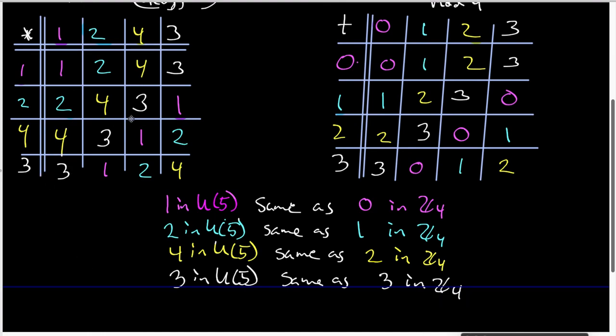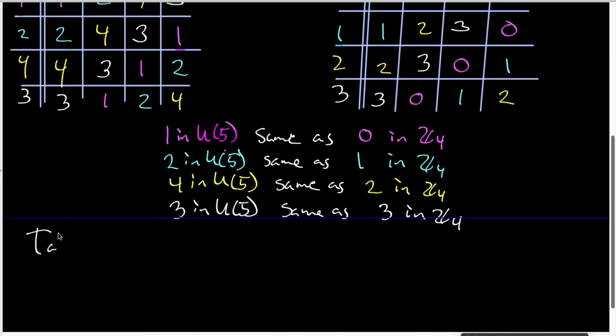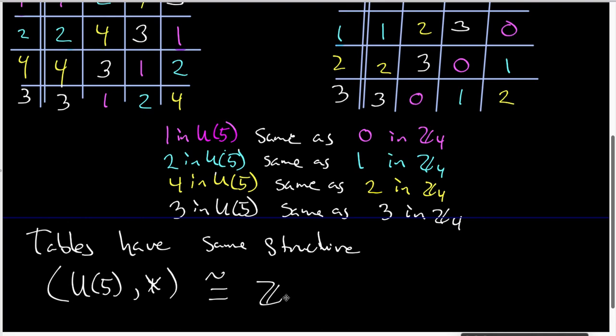And by this, I mean that they are in exactly the same places in the tables. So what this means is that the two tables do have the same structure. So the tables have the same structure. And so U5 under its times is isomorphic to Z4 under its plus.